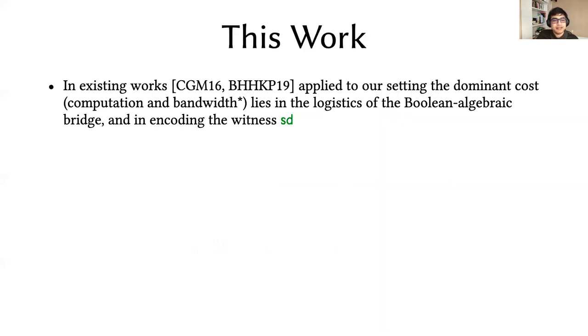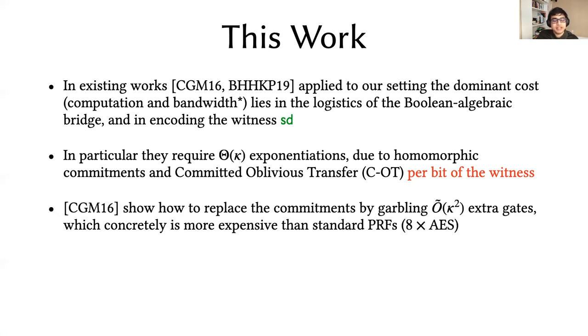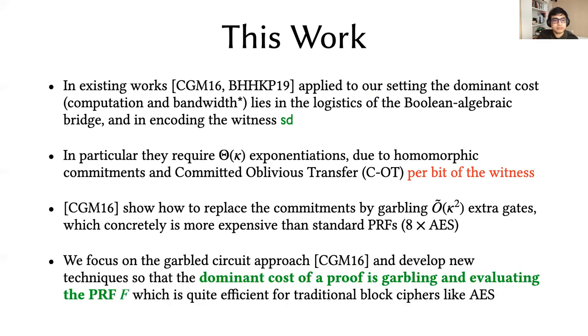In existing works, the fundamental secure computation object, for instance, the garbled circuit, is not the actual dominant cost. Instead, the dominant cost lies in logistics around it. In particular, the current techniques applied to our work would require an order of security parameter exponentiations due to homomorphic commitments and committed oblivious transfer instances that must be executed per bit of the witness. Concretely, this is in the hundreds, the number of exponentiations. Alternatively, Chase et al. show how to replace one specific part, that is the commitments, by garbling a gadget that incurs a cost of approximately quadratic in the security parameter number of gates, which is completely more expensive than a standard PRF. For instance, this gadget would concretely cost eight times as much as a single AES instance.